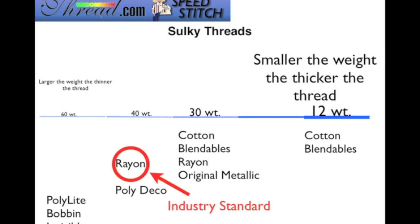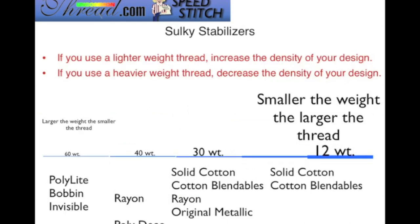If you don't understand this the first time, the more you listen to it, the more you'll get familiar with it. The rayon thread in the 40-weight is the industry standard when it comes to your machine's built-in decorative stitches, and most embroidery designs are digitized with 40-weight thread in mind. So if you use a lighter-weight thread, you have to increase the density of your design, because the lighter-weight thread is much smaller than a 40-weight thread. And if you're working with a heavier-weight thread, then you need to decrease your density.